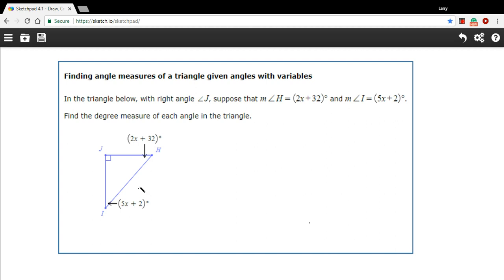The central concept here is that the angles, the three angles of a triangle, add up to 180. So we're going to set up an equation where we add all the angles together and set it equal to 180.